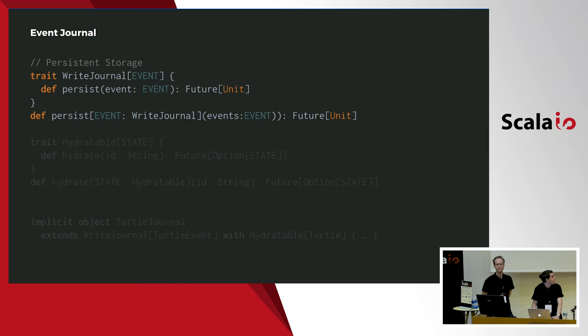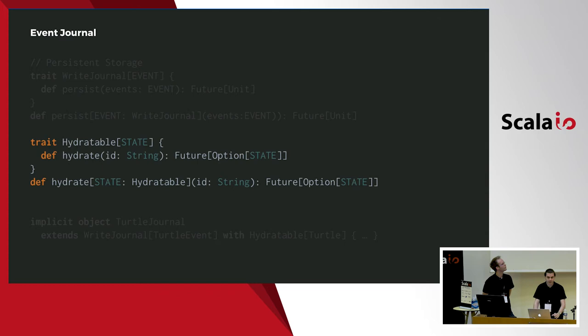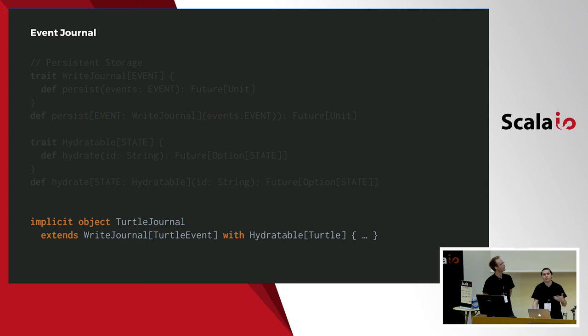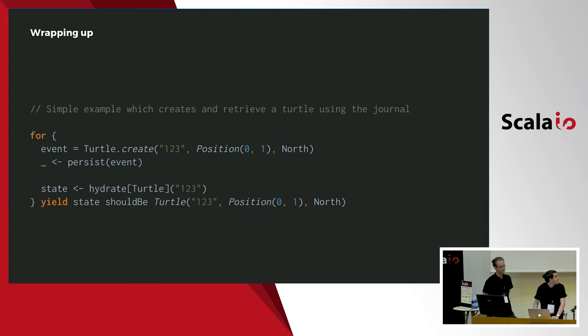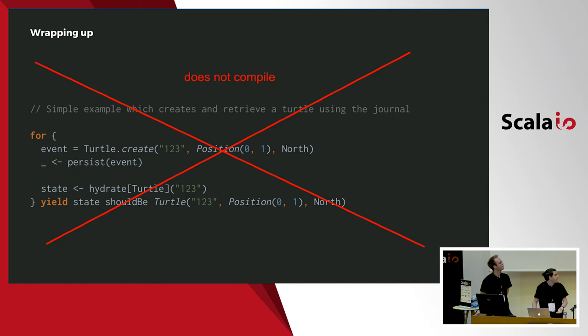Let's start with the journal. We can persist one event, and hydrate a turtle — which will fetch the events and return a new state using the event handler. We'll suppose we have an implementation for those for the turtle. Here is a simple example: we use the create command to get the creation event, persist it, and then later hydrate it and test it.